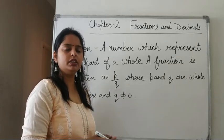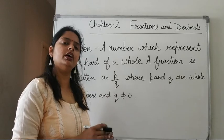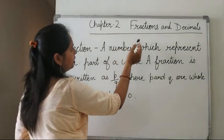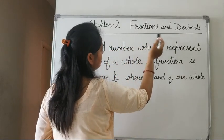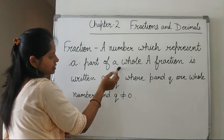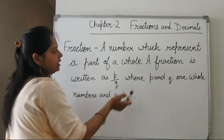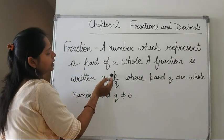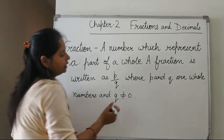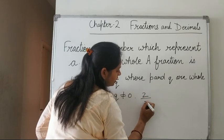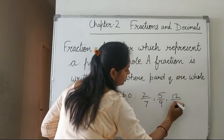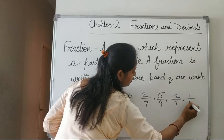As we have completed Chapter 1 on integers, now we will start with the second chapter, that is fractions and decimals. A fraction is a number which represents a part of a whole. A fraction is written as P upon Q, where P and Q are whole numbers and Q is not equal to 0. For example: 2 upon 7, 5 upon 9, 12 upon 7, 1 upon 5, etc.